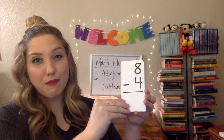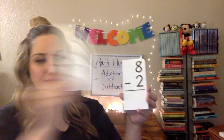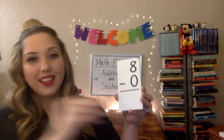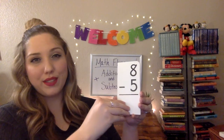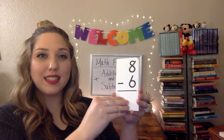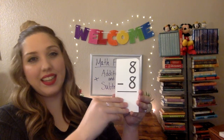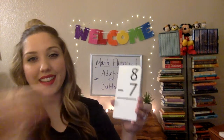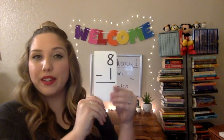And we'll do a couple more — we'll do some 8s. 8 minus 4 is... 8 minus 2 is... 8 minus 0 is... 8 minus 5 is... 8 minus 6 is... 8 minus 8 is... 8 minus 7 is... And last one: 8 minus 1 is...